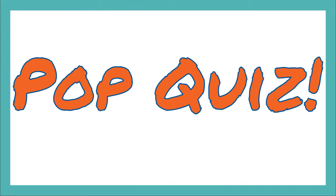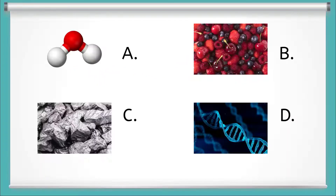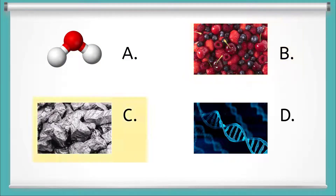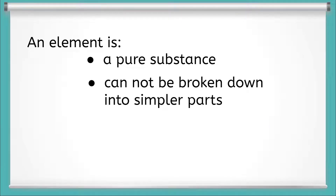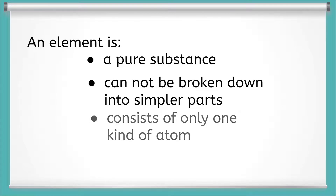Here is a fun pop quiz. I bet you already know something about elements. Which one of these four pictures is an element? A, B, C, or D? That's right, C is an element. An element is a pure substance that cannot be broken down into simpler parts and consists of only one kind of atom.